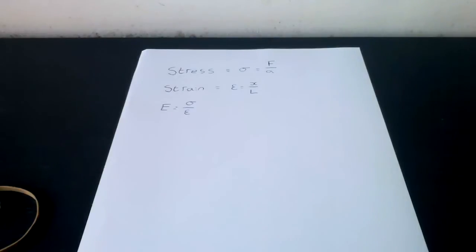Strain is defined as the extension per unit length. It is calculated by X over L, where X is the stretch length and L is the original length. Strain has no units because it is a ratio of lengths.